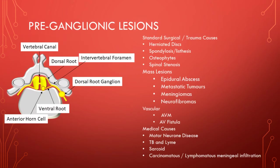Causes of pre-ganglionic lesions include herniated discs, spondylosis, spinal stenosis, mass lesions such as abscesses or tumours, vascular causes like AVMs, and medical causes — most importantly motor neuron disease, and also TB and Lyme disease among others.